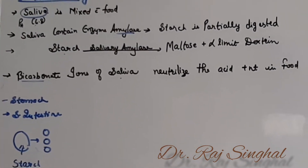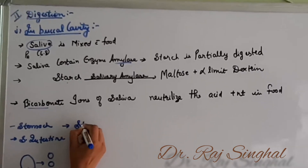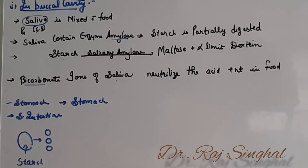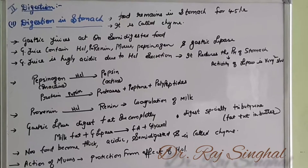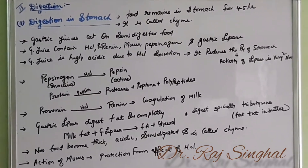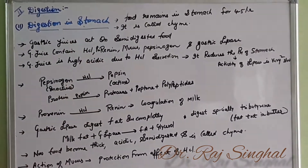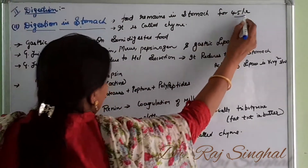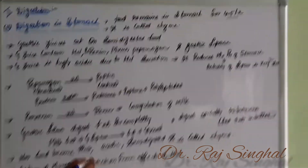From the buccal cavity, the food passes through the esophagus to the stomach, where further digestion occurs. After digestion in the buccal cavity, the food reaches the stomach through the esophagus. In the stomach, the food remains for 4 to 5 hours and is known as chyme.